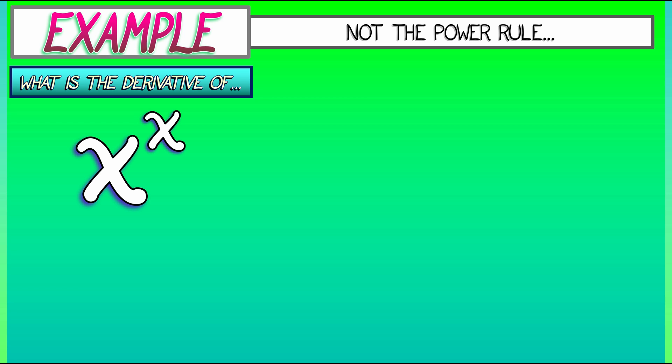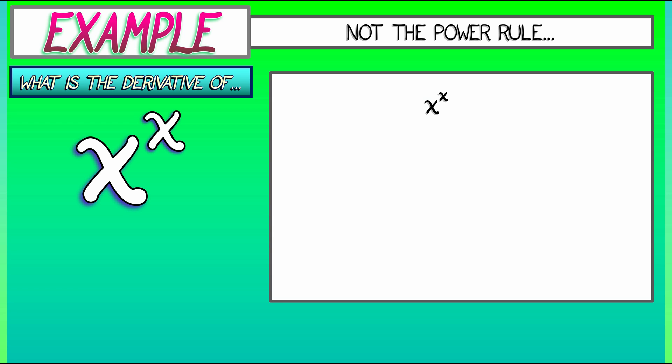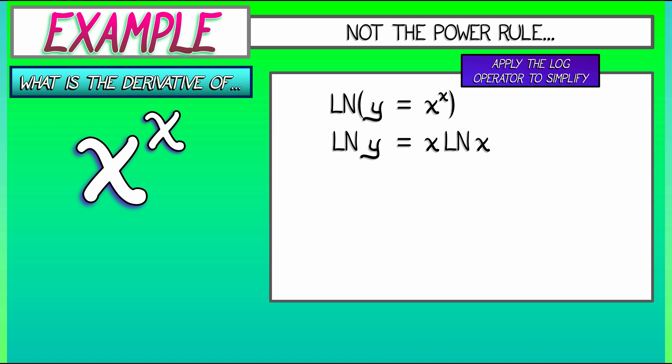Let's begin by writing out an equation, setting x to the x equal to y. And then what we're going to do to manage that function in the exponent, we're going to apply the log operator to simplify. So take the log of both sides. On the left, we have log of y. On the right, using logarithm laws, we have x times log of x.